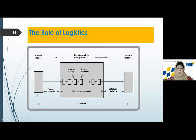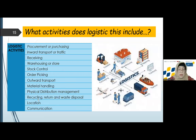What does logistics do? It is procurement, inward transport, traffic, receiving, warehousing, stock, order picking, outward transport, material handling, vehicle distribution management, recycling. Sometimes we have reject products, and we must send them back to the manufacturer — we call it return. Also location and communication. But simply, the main concept in logistics is inventory, transportation, and warehousing.